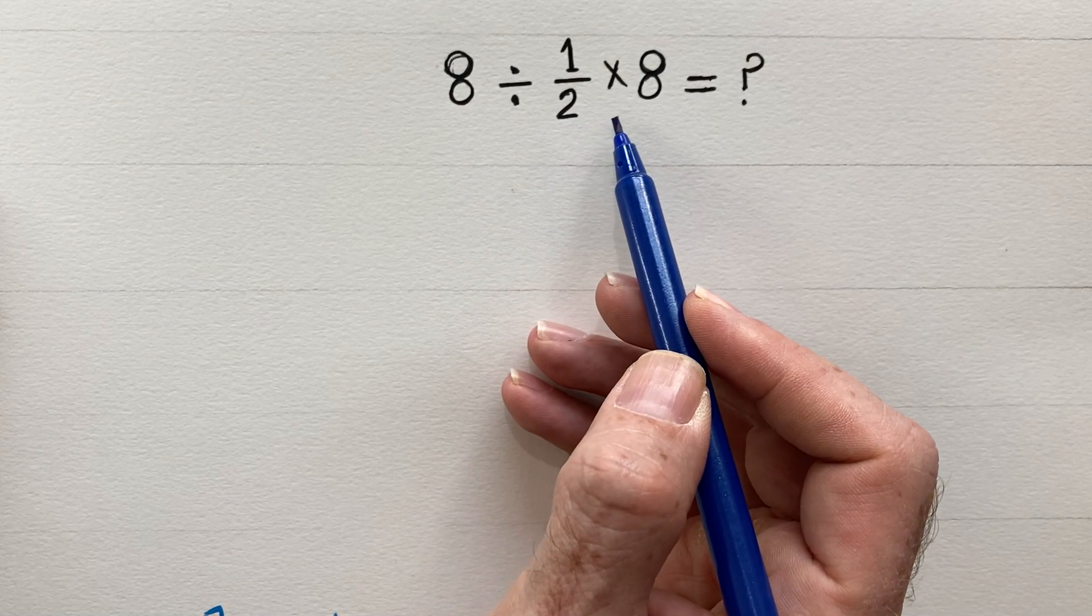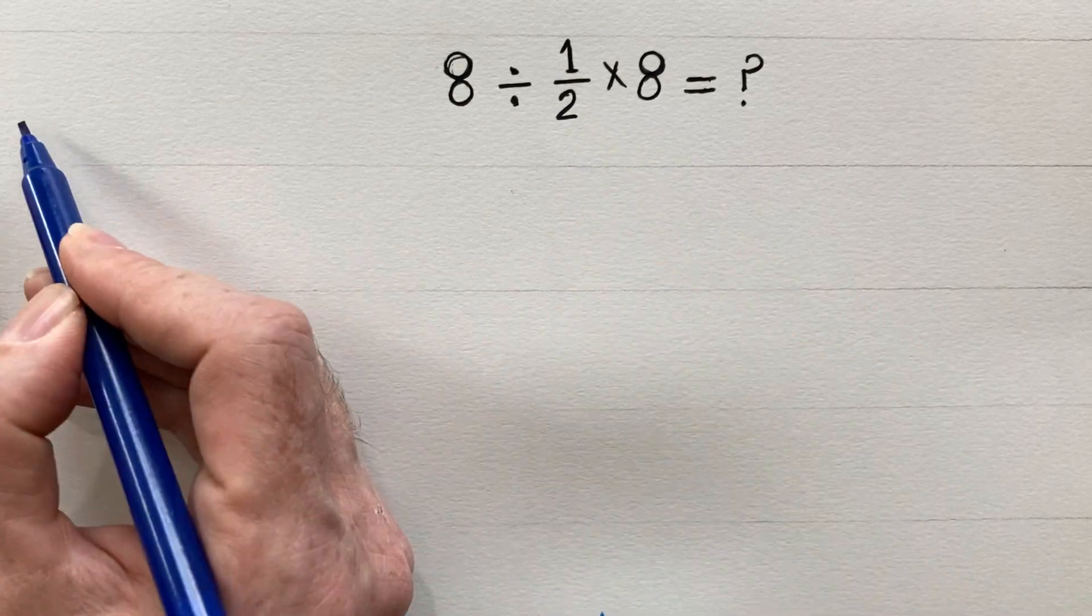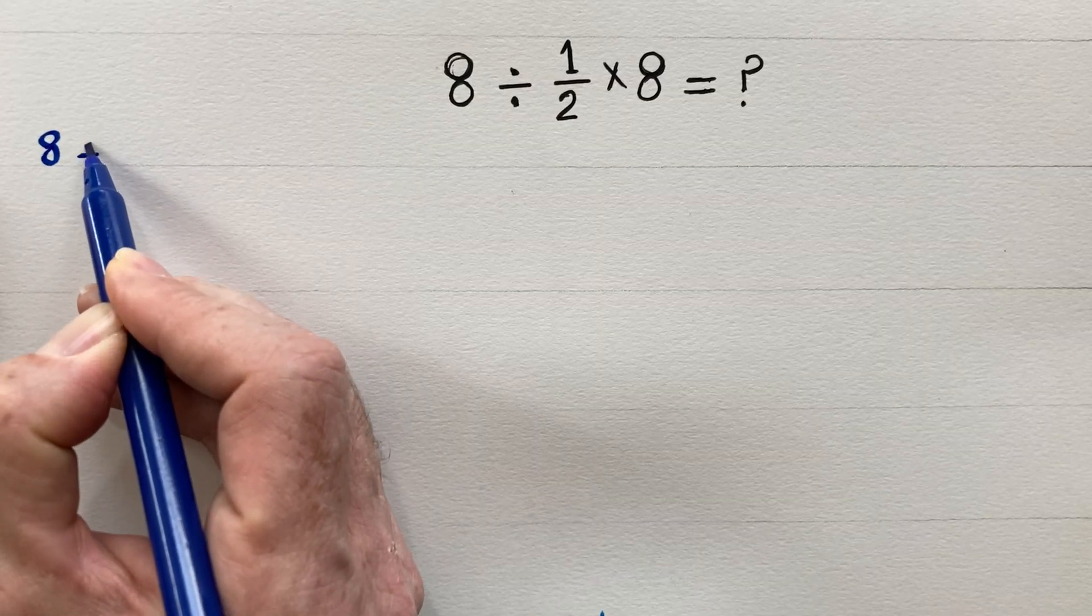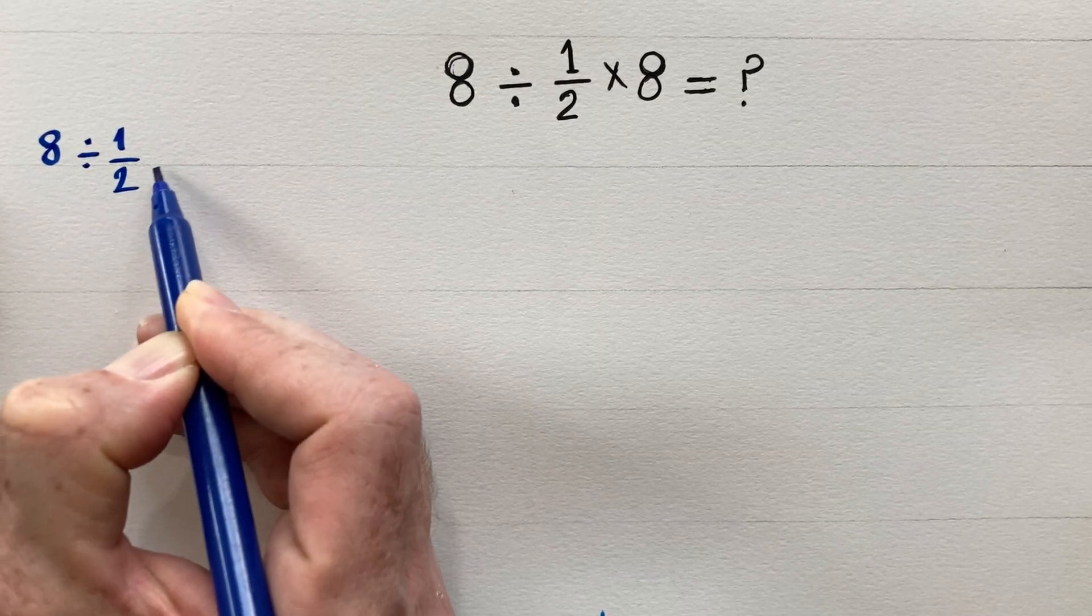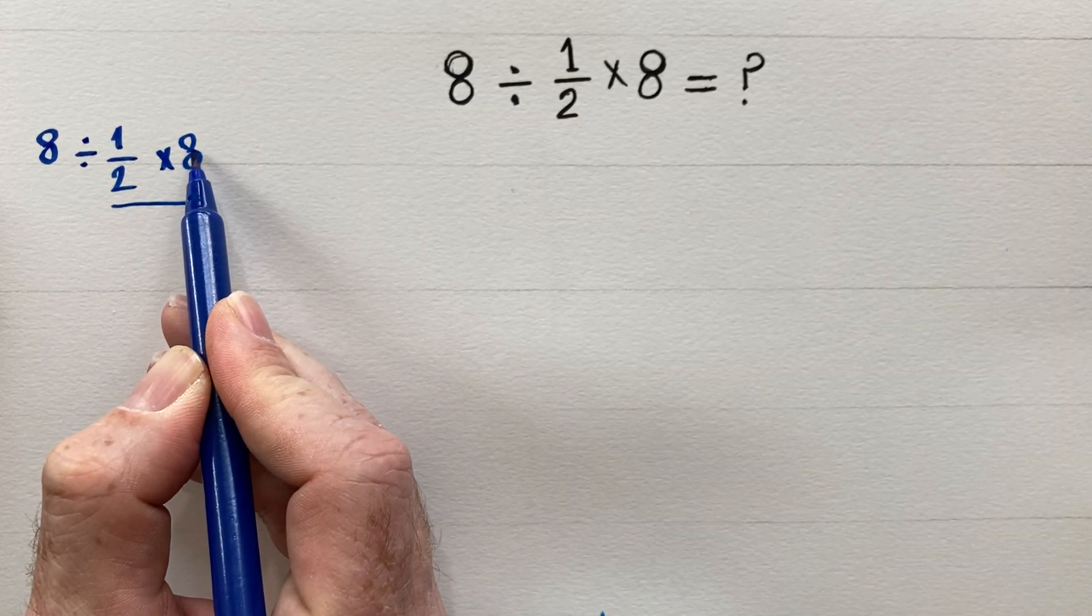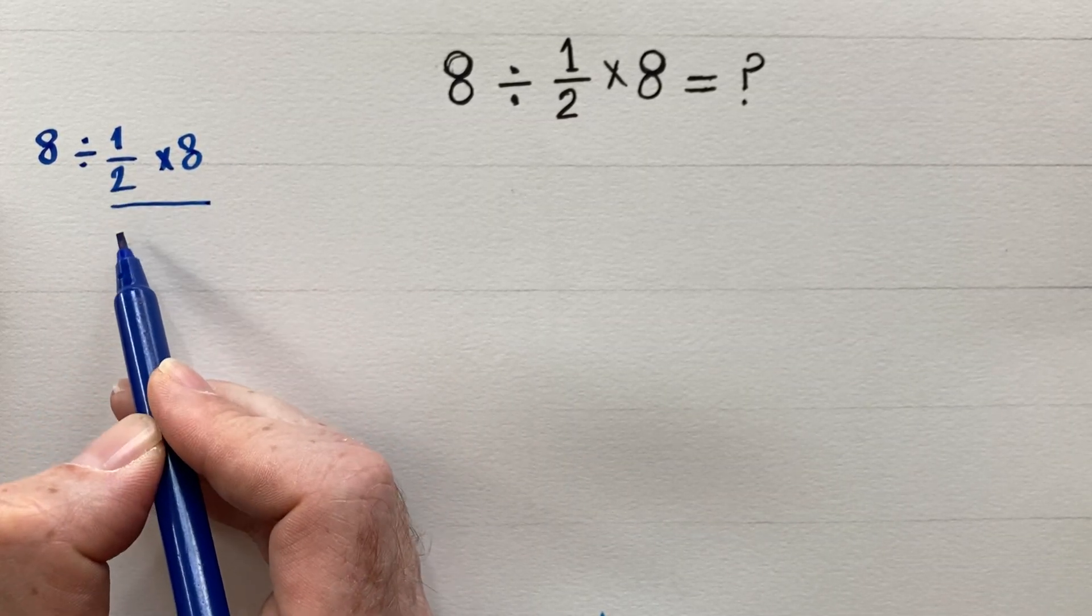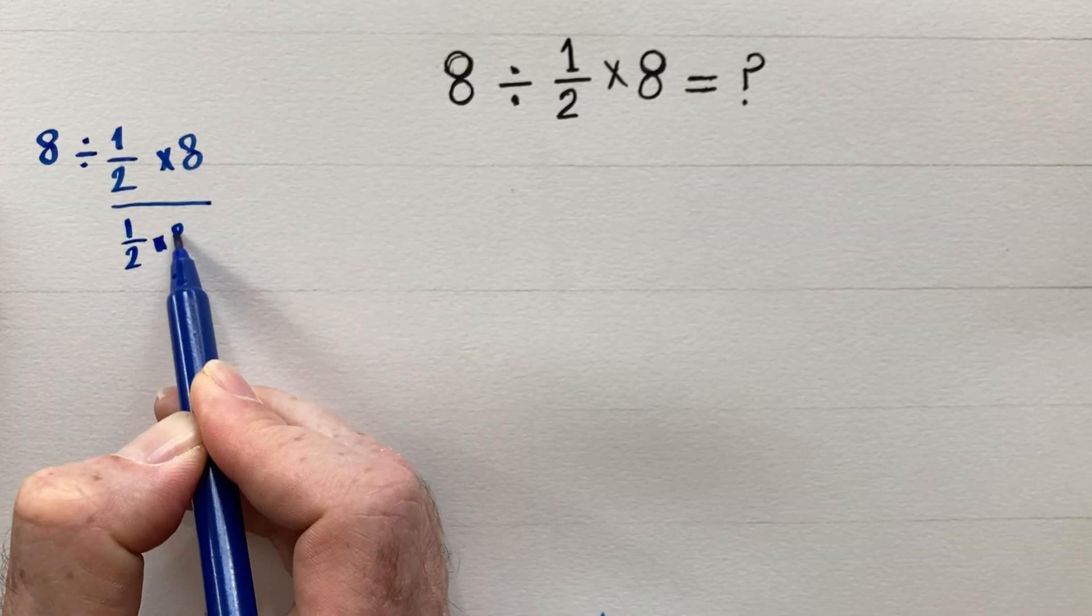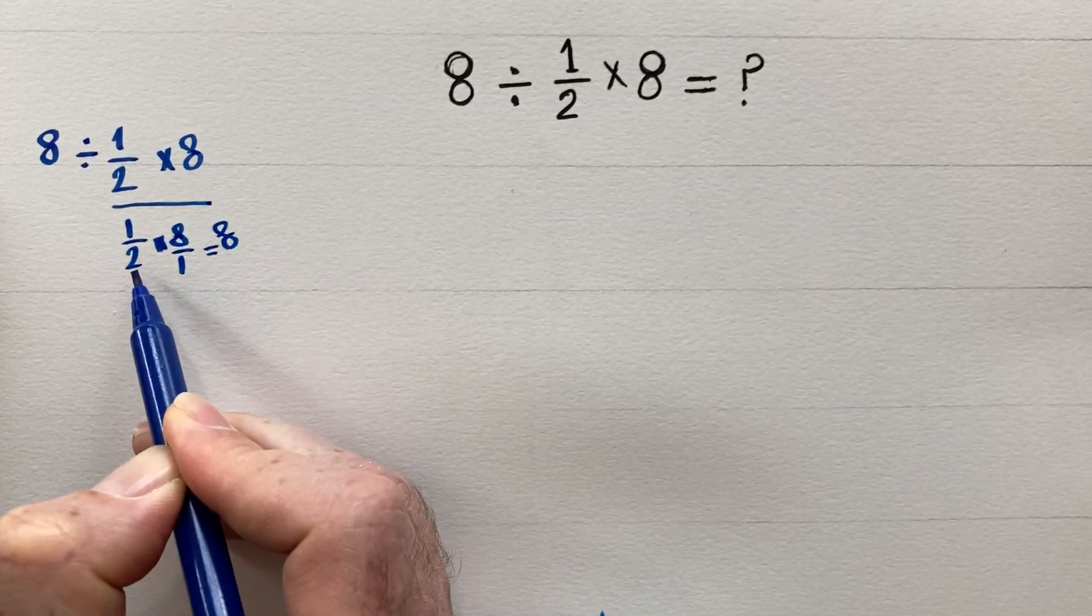Most people look at this and immediately scream 2. Let's see why. 8 divided by 1/2 times 8. First, 1/2 times 8. 1/2 times 8/1. 1 times 8 is 8, 2 times 1 is 2, so 8/2 is 4.